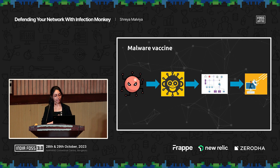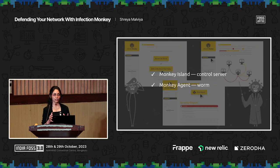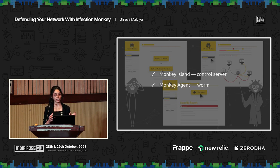Let's get down to Monkey business — how Infection Monkey actually works. It has two major parts. The first is the Monkey Island, which is the control server. This is where you configure how you want the software to run and see any activity performed by it — you get a formatted report showing what's wrong with your network. The second part is the Monkey agent, the actual computer worm that propagates in your network, moving from system to system and exploiting them.